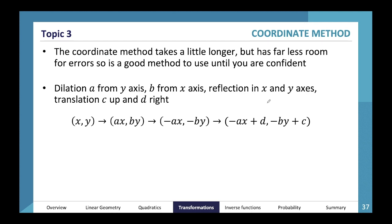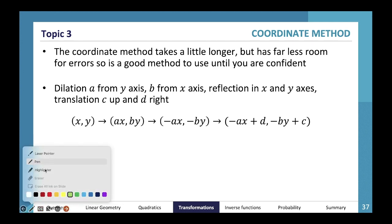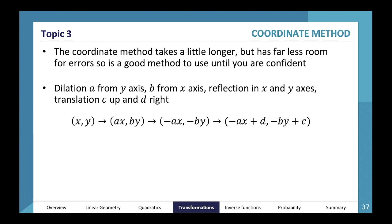There are a couple of ways of figuring out our dilations, reflections, and translations. One way is the coordinate method, where we apply these transformations to certain coordinates, map them out, and then convert back to normal coordinates by substituting into the equation. It takes longer but has less room for error. I use this method a lot because I find it easier to visualize.